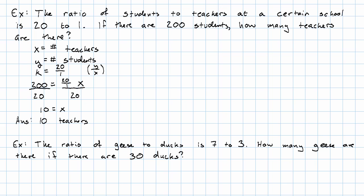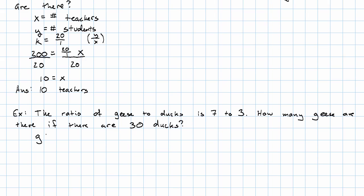We could say, instead of using the letters X and Y, G is the number of geese, D is the number of ducks, and then the ratio, we're told the ratio of geese to ducks, that's G over D. The ratio of geese to ducks is 7 to 3.